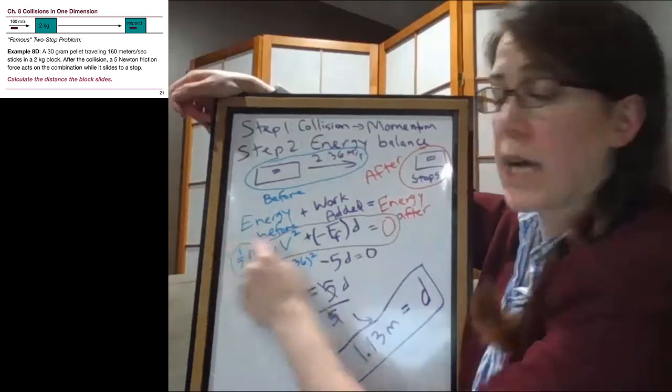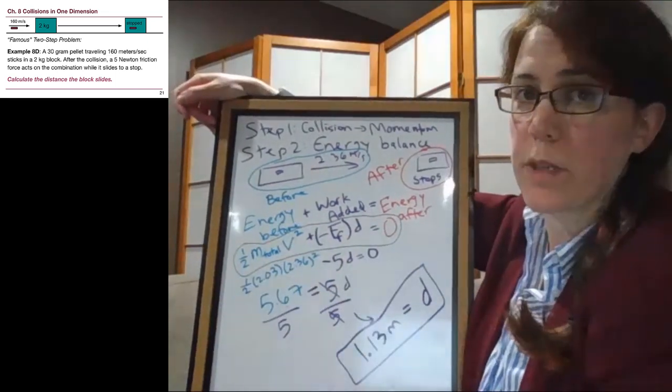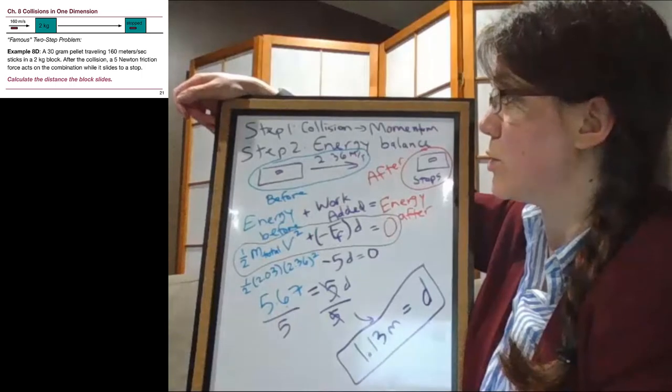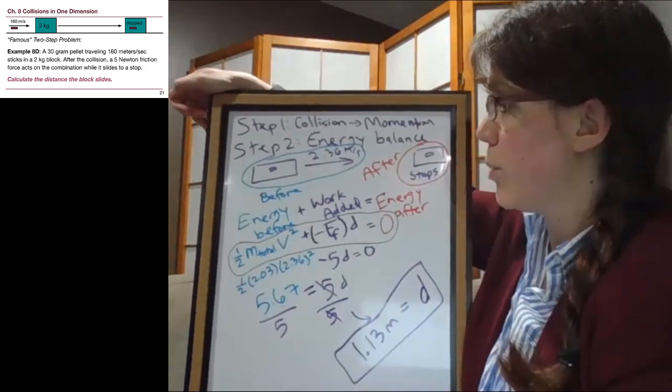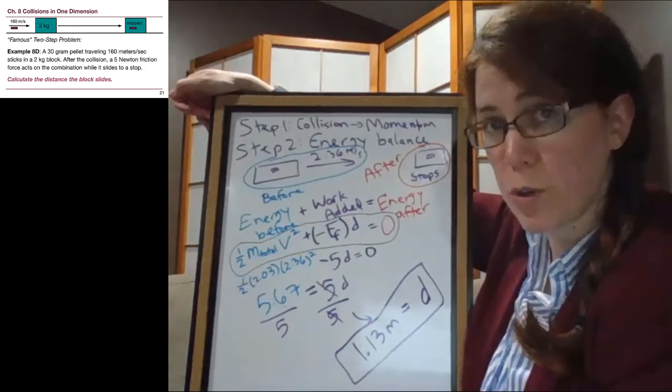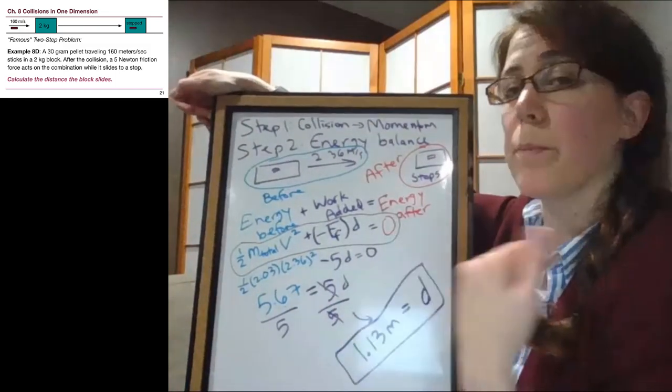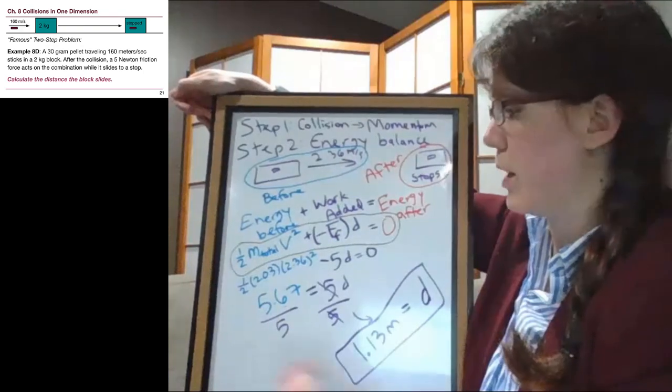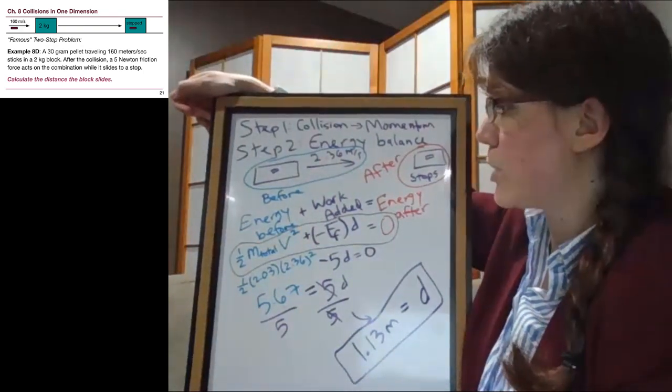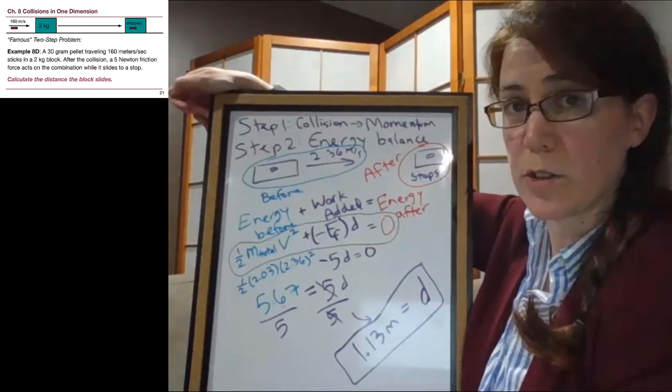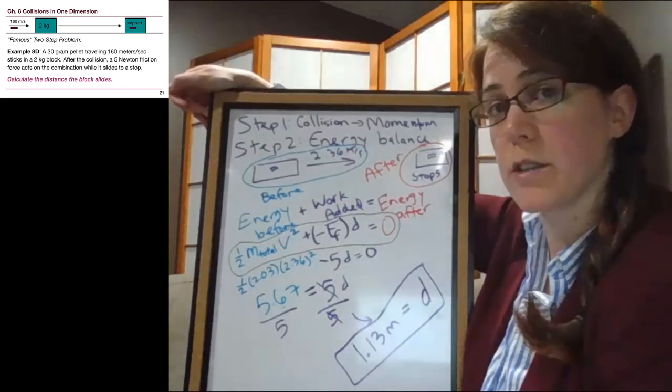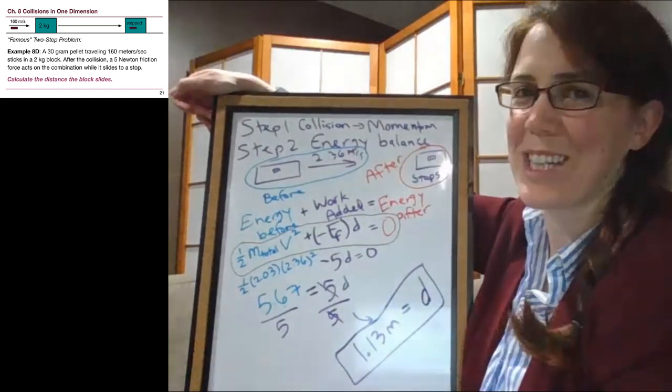So we need to know how fast the total mass was moving after the collision, and then we can set up an energy balance problem. We'll see what that looks like in the other two examples coming up, but the key thing is that there is no shortcut here - it takes two different steps: collision using momentum and energy using our energy balance. So make sure to compare this one with the next two examples to see the similarities and differences, and I'll see you in the next one.